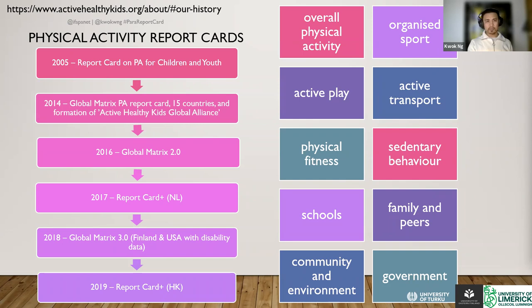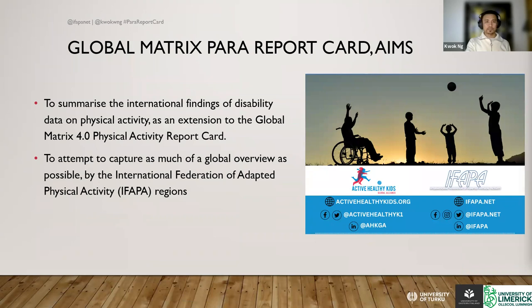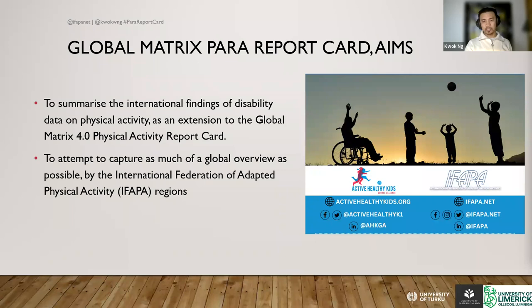The aims of this were to summarize international findings on disability data on physical activity as an extension to the Global Matrix 4.0 physical activity report cards, attempting to capture as much of the global overview as possible. We used the International Federation of Adaptive Physical Activity regions as a way to see the spread of information, though one country in one region doesn't necessarily mean they represent that entire region — it just means that part of the region has been covered.